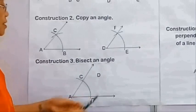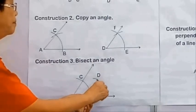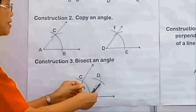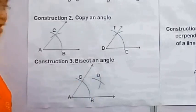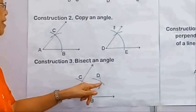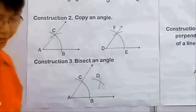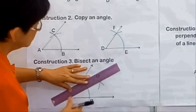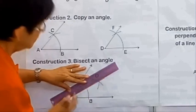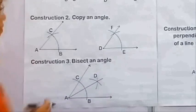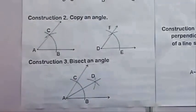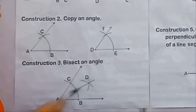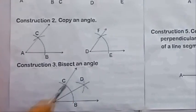From point B, swing an arc into the interior of the angle. Then from point C, swing another arc intersecting the first arc. Connect A and D, the point of intersection of the two arcs. So we have bisected angle A, and we see that angle BAD is congruent to angle DAC.